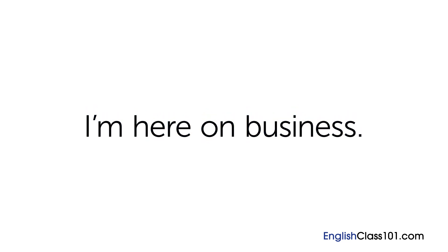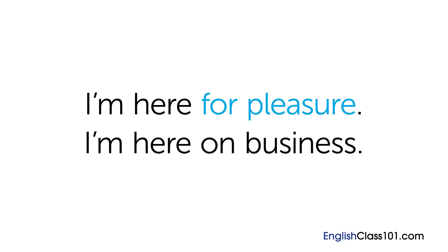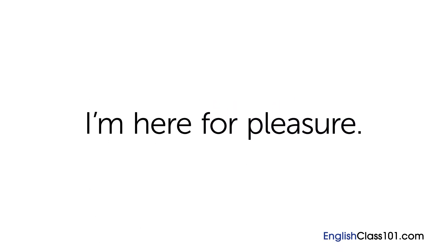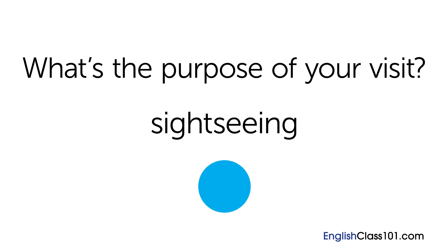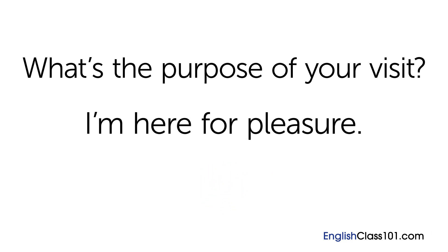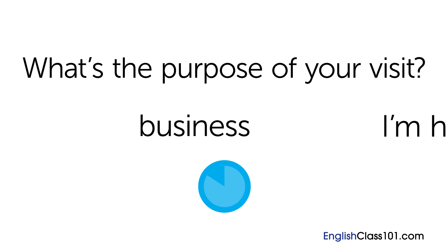This means that Gustavo is in the country to do business and not just to sightsee. Alternatively, he could have said: 'I'm here for pleasure.' This is the same pattern — the only difference is that 'on business' is replaced with 'for pleasure.' Now you try. Imagine your trip is for sightseeing. Answer: 'What's the purpose of your visit?' — I'm here for pleasure. Now imagine you are visiting the US on business. Answer: 'What's the purpose of your visit?' — I'm here on business.